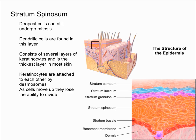The stratum spinosum consists of several layers of keratinocytes and is the thickest layer of the epidermis. The keratinocytes are attached to each other by desmosomes. As cells move up towards the surface, they lose the ability to divide, and keratin fibers cause the cells to flatten as they move upward.